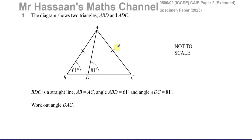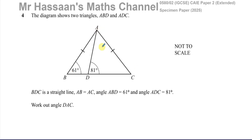The diagram shows two triangles: ABD, which is a small triangle inside or next to the big triangle ADC. ABD and ADC are two triangles joined together, as we can see. BDC is a straight line, and AB and AD are the same length, as marked — this is an isosceles triangle.